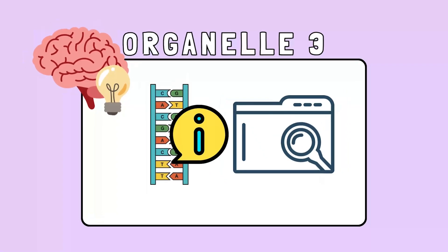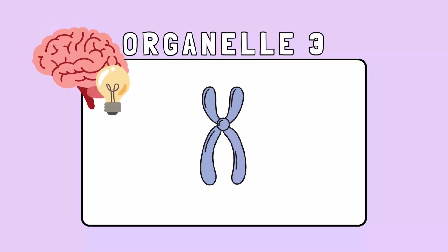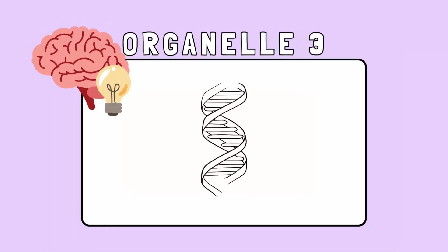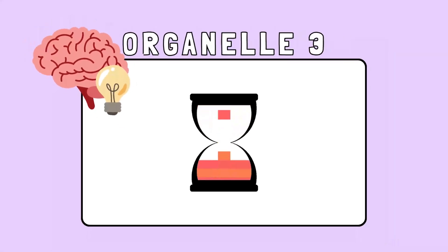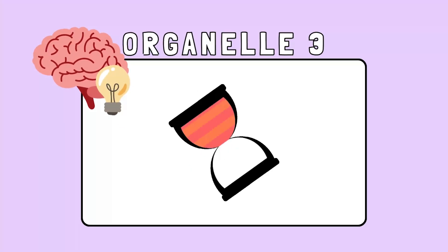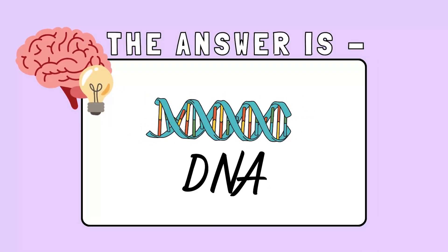This organelle carries genetic instructions for the development of life. It is organized into structures called chromosomes and is shaped like a double helix. The answer is DNA — the master plan for building and maintaining every organism.